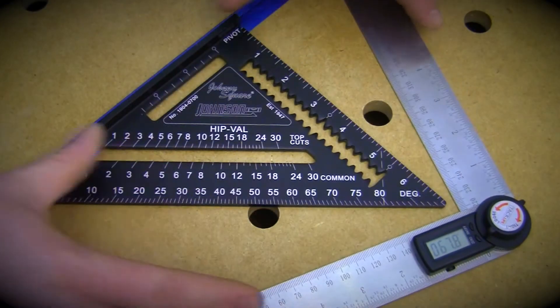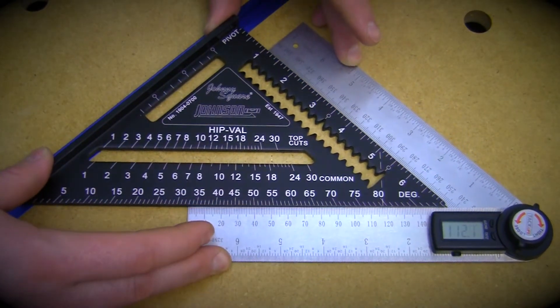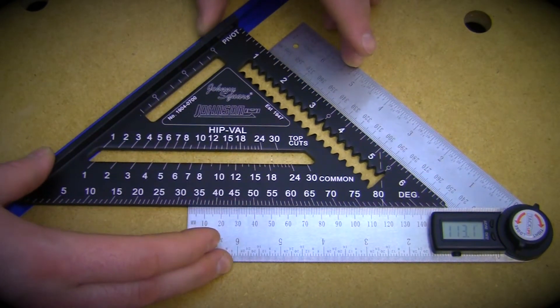With the square sitting flush to my surface, I closed the blades until they were flush on the 45 degree edge of the square. With everything flush, I then zeroed out that reading.